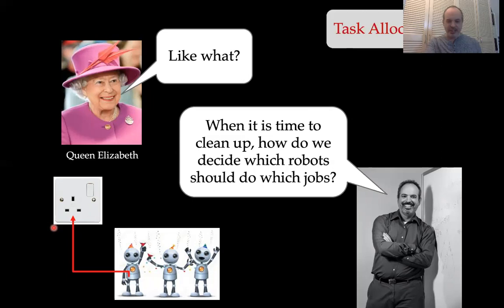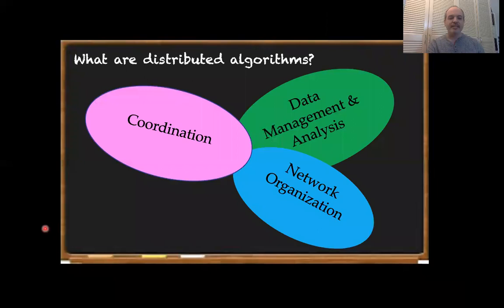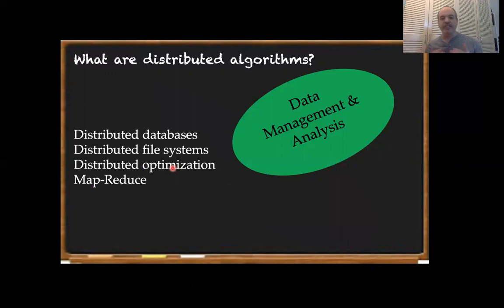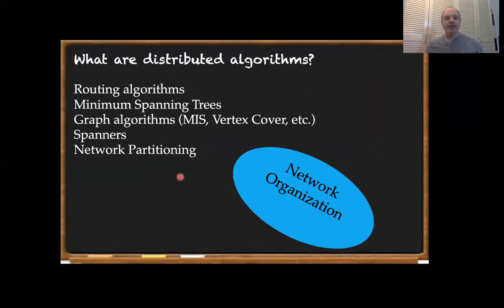If I was talking to Queen Elizabeth by now, I'm probably done — I don't think she's interested in hearing any more than that. But since I'm talking to you all, I can say a little bit more. If I had to answer the question — what are distributed algorithms? — I would divide them into three categories: coordination protocols, data management and analysis, and network organization. Under data management, you might get things like distributed databases, distributed file systems, distributed optimization, MapReduce, cluster computing — types of protocols built around moving data around and analyzing it.